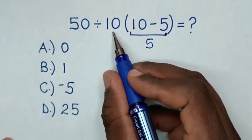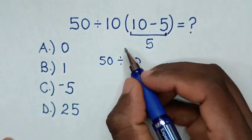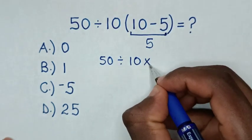Then it will be 50 divided by 10. Then, in here, it will be times 5.